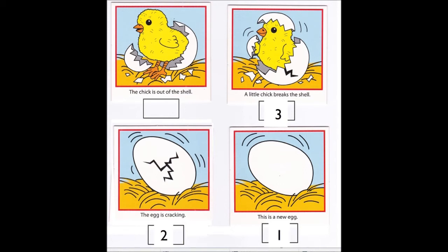Number four — and finally number four would come right here, because this is the last step in the story. The chick is out of the shell. So we have one: this is a new egg. Two: the egg is cracking. Three: a little chick breaks the shell. And four: the chick is out of the shell.